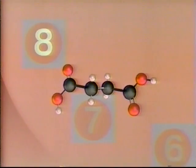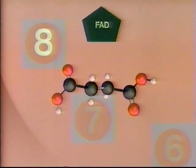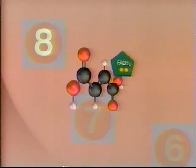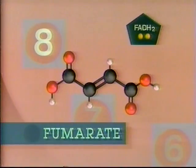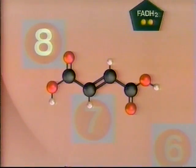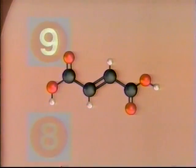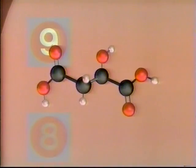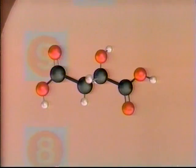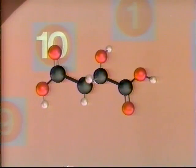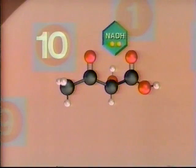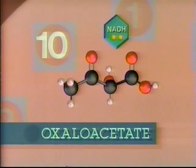Succinate encounters a molecule of FAD, and this reaction produces a newcomer — the energy carrier FADH2 — and fumarate. Fumarate, in turn, reacts with water, and the product is malate. In the final reaction, malate encounters an NAD+, and produces the last of the NADH energy carriers and regenerates oxaloacetate.